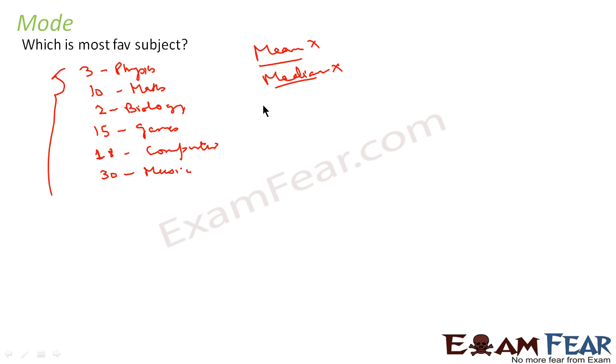What will mode tell? Mode will tell which has the highest frequency. For example, in this case, 30 guys like music so we'll say the mode is music because the maximum number of guys like it. From a given data, you want to find the maximum occurrence - maximum occurrence - then you have to find mode. One more example I'll take.